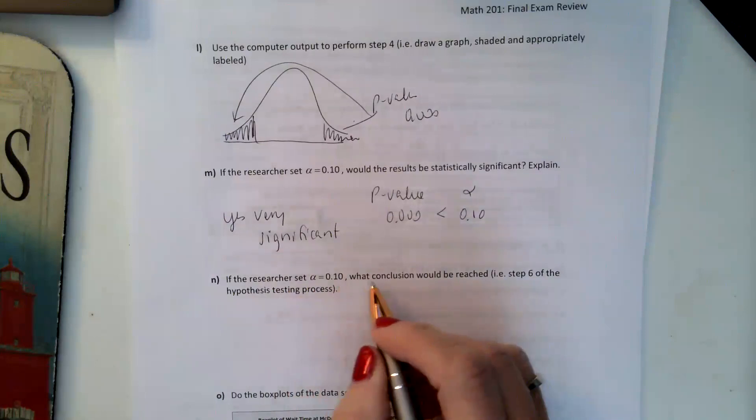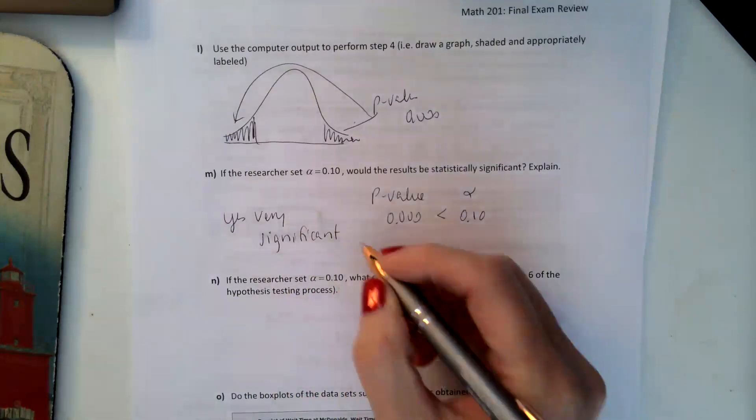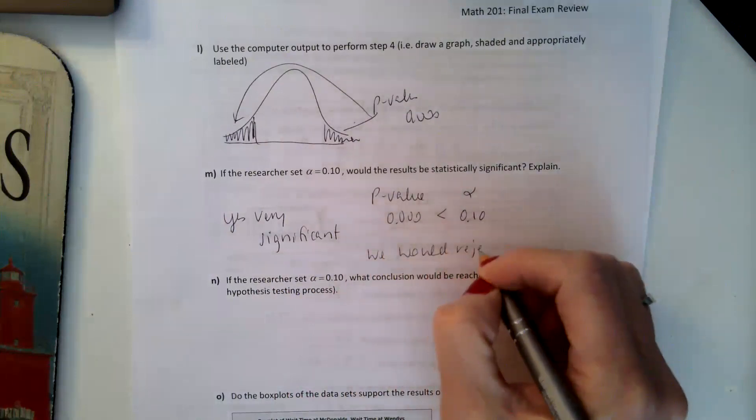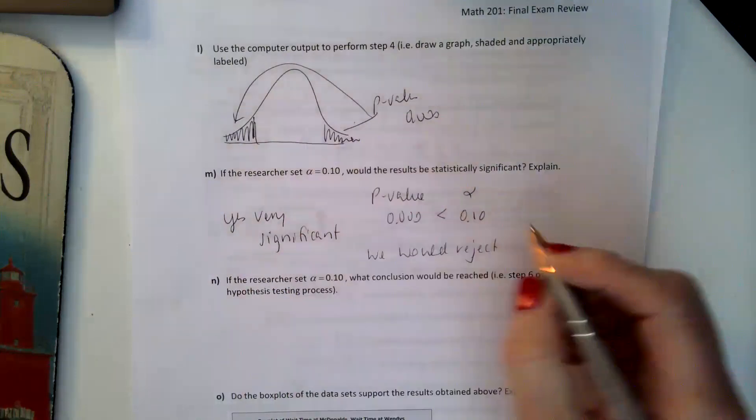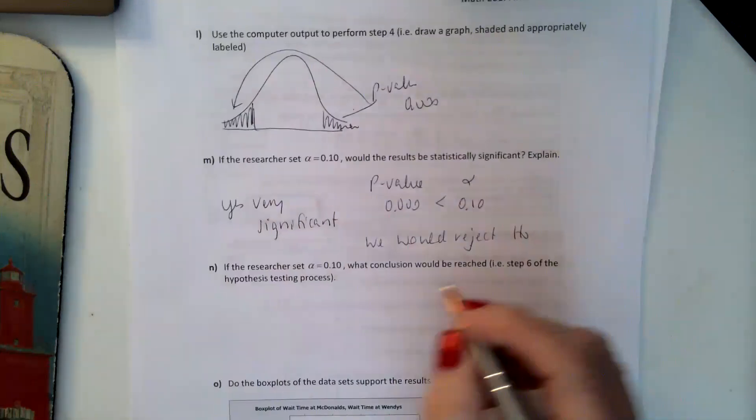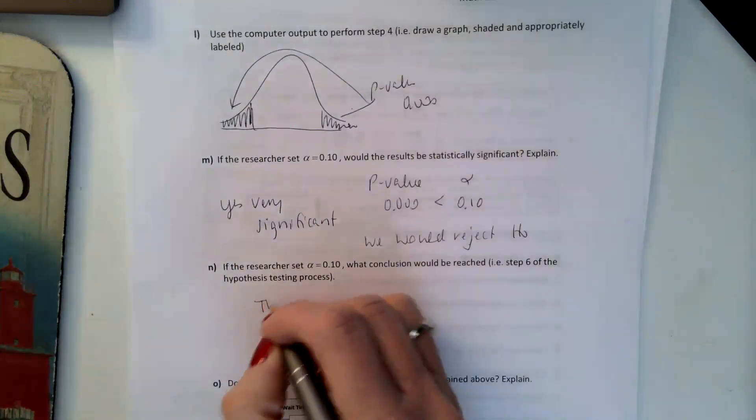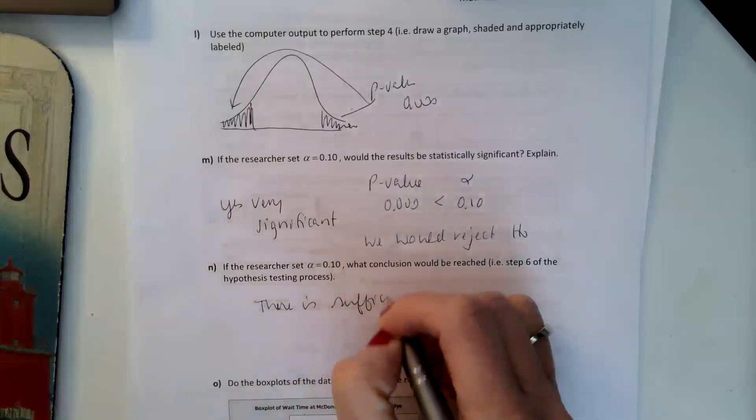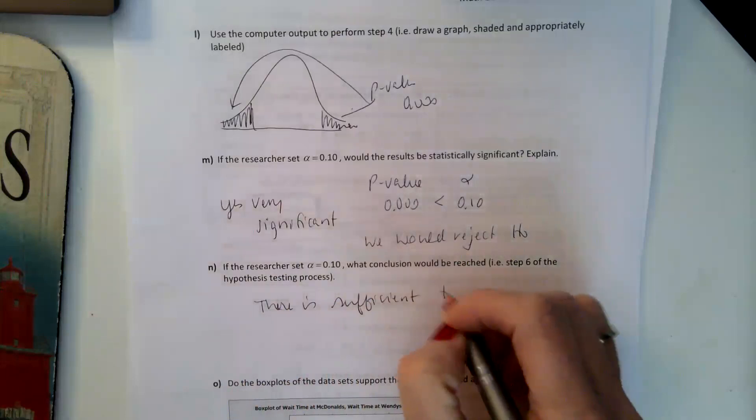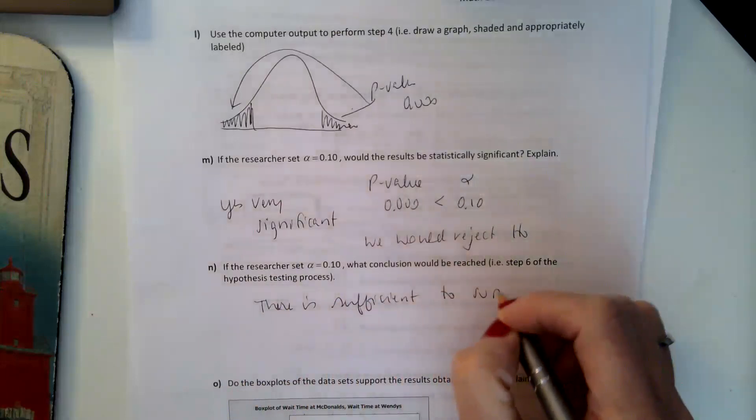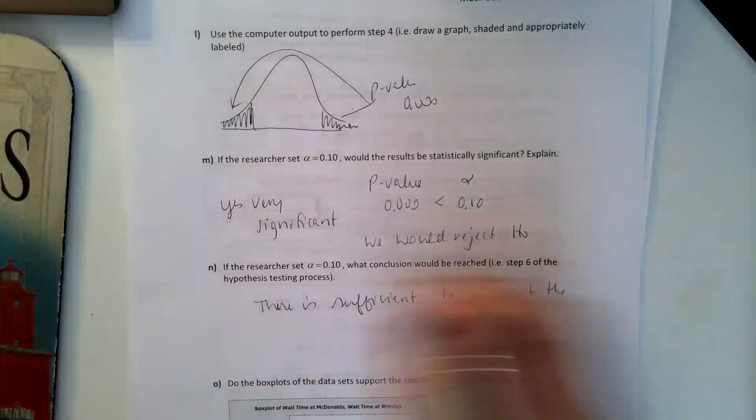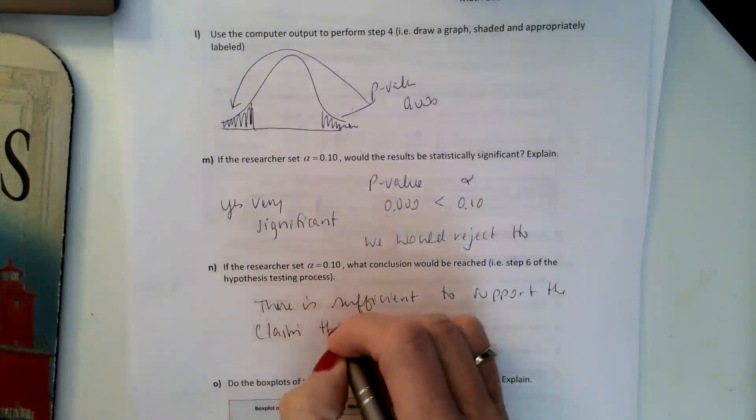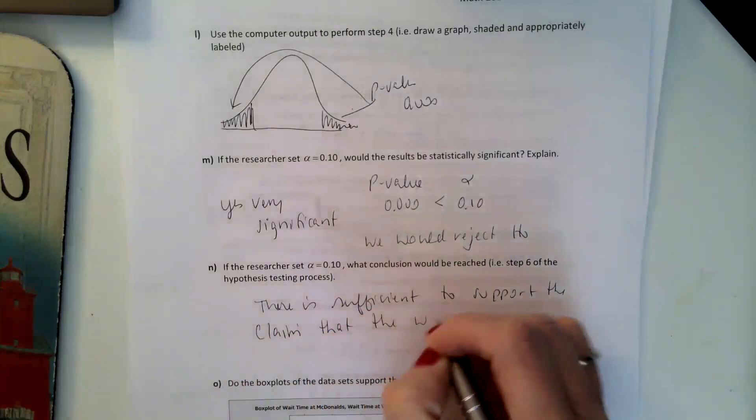And using that alpha, what conclusion would be reached? So we would reject H₀. That is the same as saying it is significant. And because we're rejecting H₀, there is sufficient evidence to support the claim that the wait times are different.